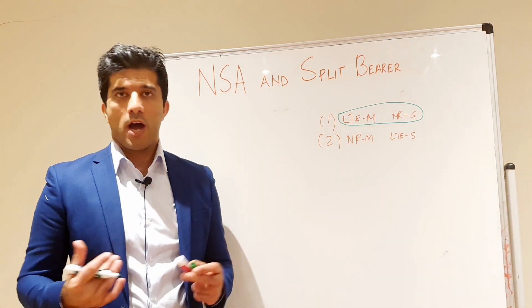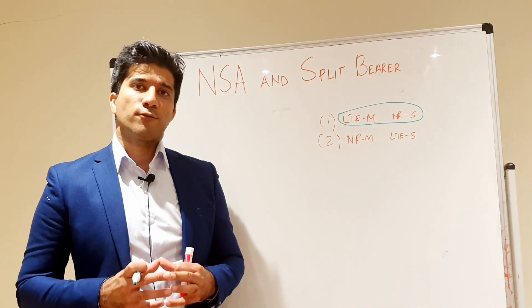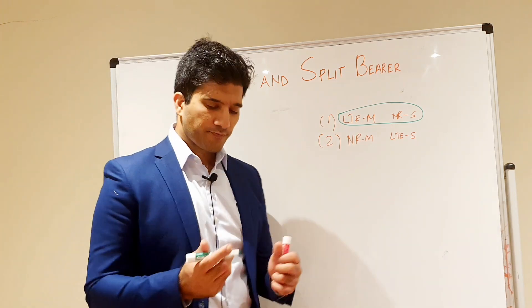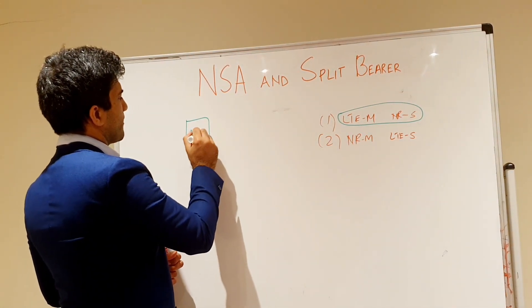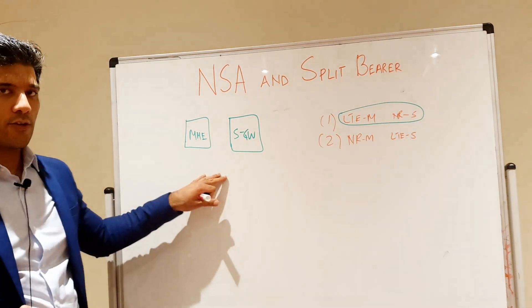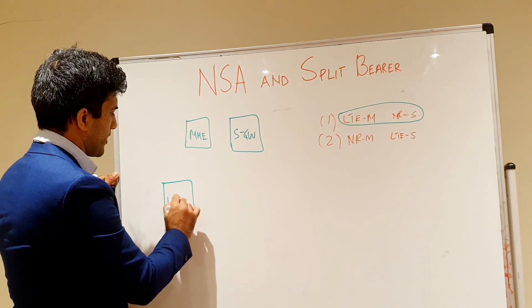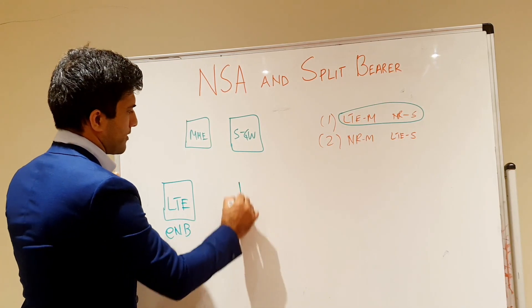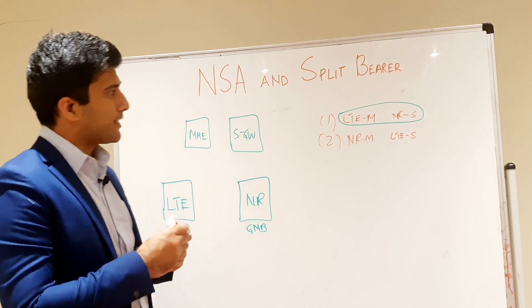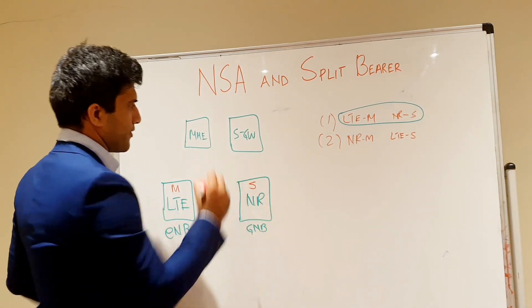Now let's look at how the network interacts in terms of core network, data plane, and control plane. For example, here we have our MME and our SGW — this is the core part of the network. This is your serving gateway. We have the LTE node, the eNodeB, as the master, and the NR gNodeB as the secondary.